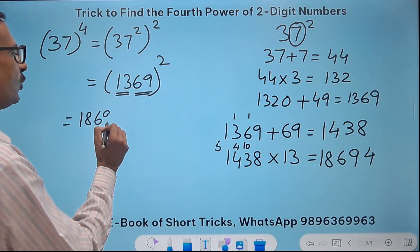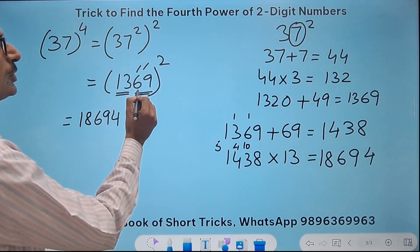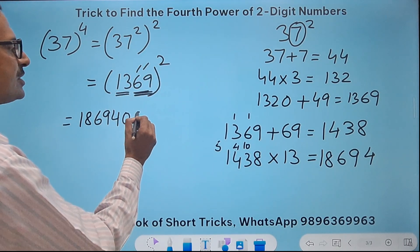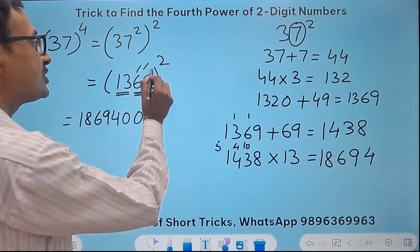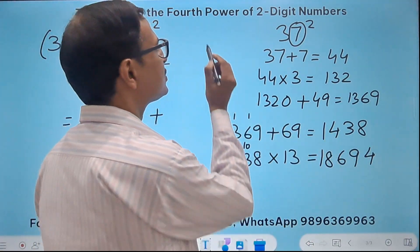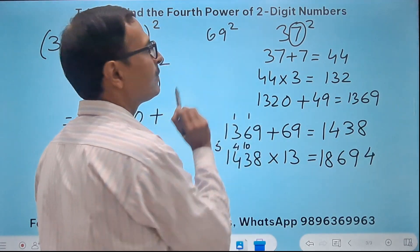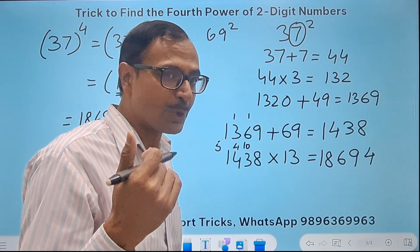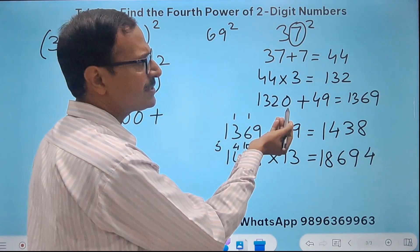Now what happens to 18694? 18694 followed by, because I took 2 digits here, 2 zeros plus I have to do 69 square. Add 69 square. So how do you find 69 square? Again use the same method or you can use the first method also which I told you. But this method is easier.